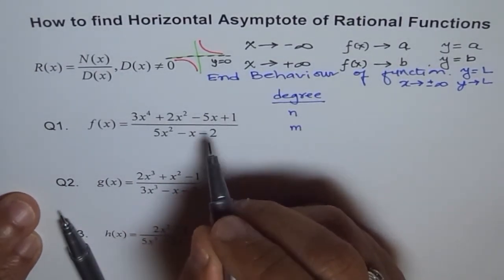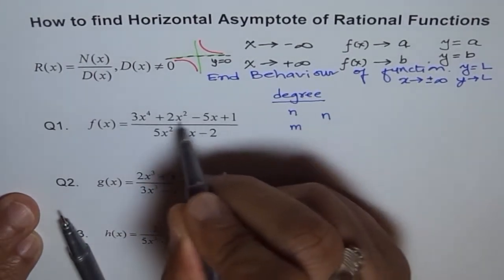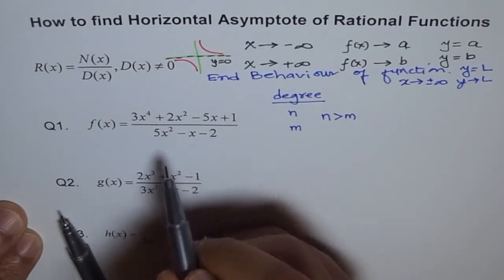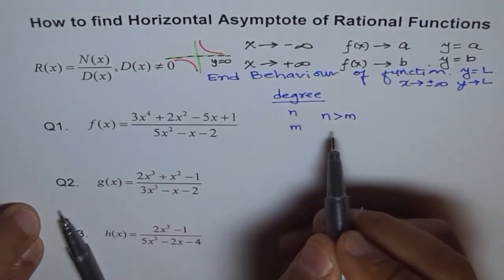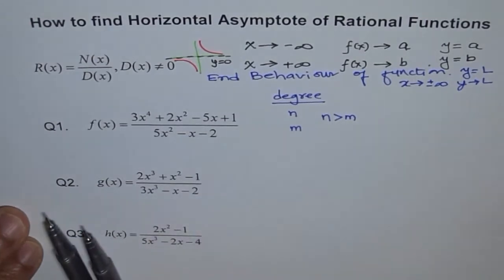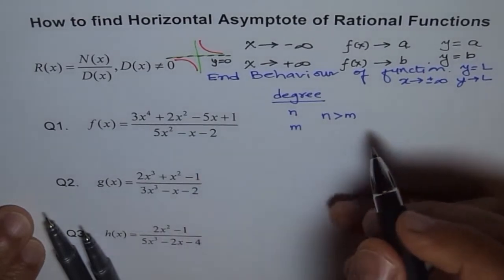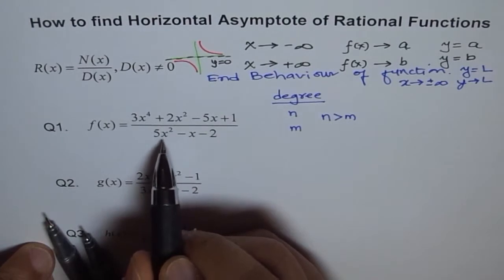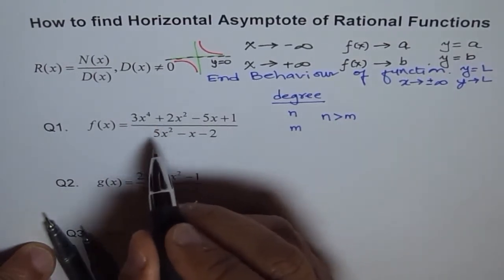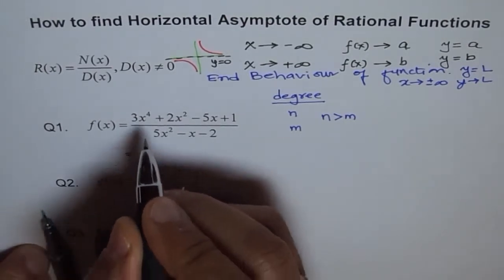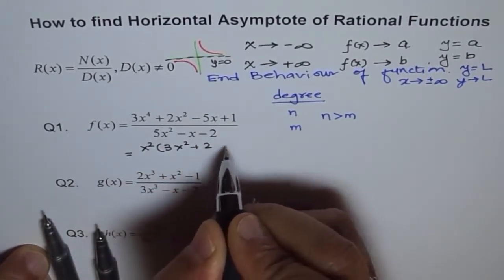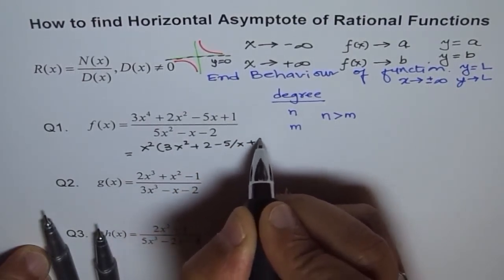Question 1: f(x) = (3x⁴ + 2x² − 5x + 1) / (5x² − x − 2). The degree of the numerator is 4 and the leading coefficient is 3. The degree of the denominator is 2. So here, the degree of the numerator is higher than the degree of the denominator — this is Case 1, where n is greater than m.